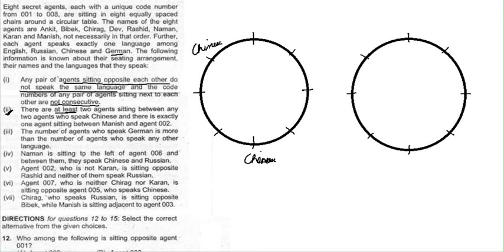The fifth condition says: agent 002, who is not Karan, is sitting opposite Rashid, and either of them speaks Russian. The sixth condition says: agent 007, who is neither Chirak nor Karan, is sitting opposite agent 005, who speaks Chinese. So agent 005 speaks Chinese, and since 005 is opposite 007, these two positions are fixed relative to each other.